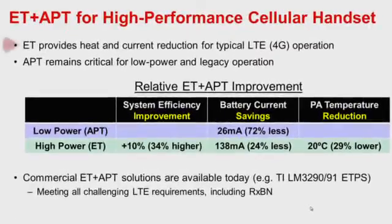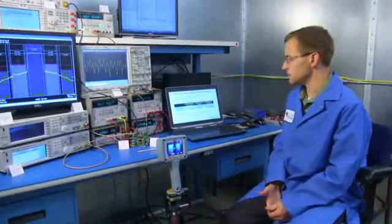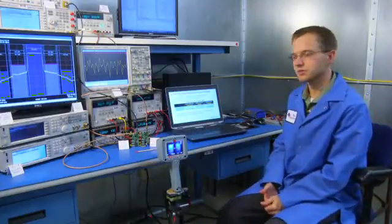To summarize, envelope tracking is providing us a heat and current reduction, especially in the typical LTE operating condition, high power and high peak to average ratio. APT is still a critical function in that it reduces the battery current for low power and legacy use cases. Commercial envelope tracking and APT solutions are available today that meet all the challenging LTE requirements including receive band noise. And for more information, please take a look at the links. Thanks for watching.